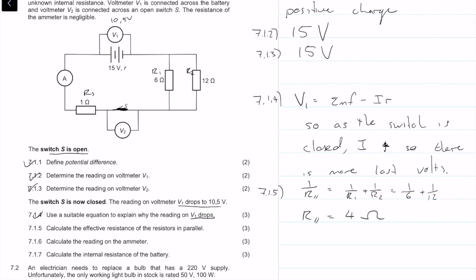Drawing an equivalent circuit: we have 1 ohm in series, a voltmeter, 4 ohms for the parallel combination, and the battery. The reading across the battery is 10.5 volts and the cell is 15 volts.